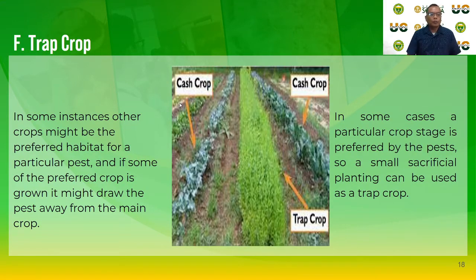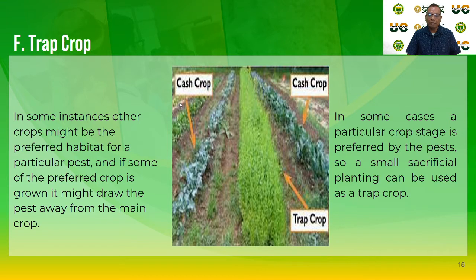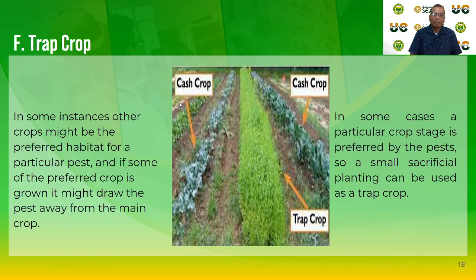Trap crops: in some instances, other crops may be a preferred habitat for a particular pest. If some of the preferred crop is grown nearby, it might draw the pest away from the main crop. In some cases, a particular crop stage is preferred by the pest, so a small sacrificial planting can be used as a trap crop. Trap cropping means planting a similar or other variety near the main crop to attract insect pests during a certain stage of crop growth.